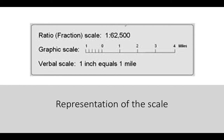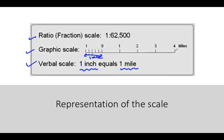There are three types of scale: ratio scale, graphic scale, and verbal scale. In verbal scale, everything is verbalized — for example, one inch equals one mile, meaning one inch represents one mile on the map. In graphical scale, you have to understand visually — within one centimeter it represents one mile, going from zero to one. The ratio scale is expressed as 1:62,500, where you figure out the ratio.